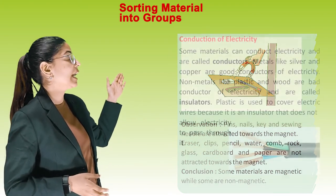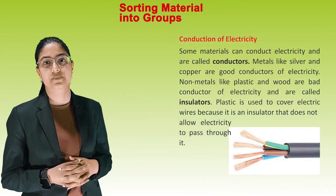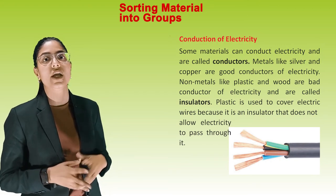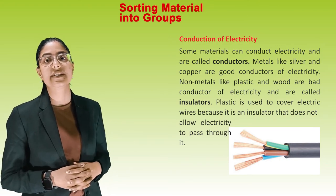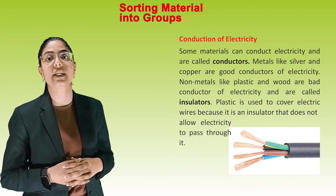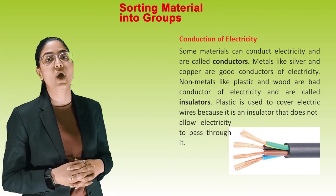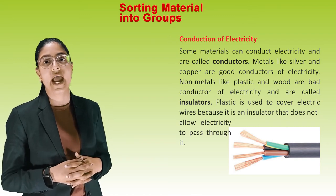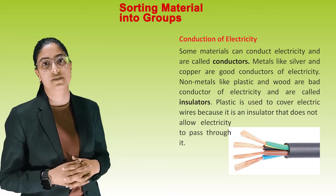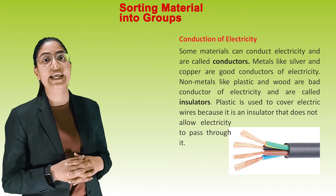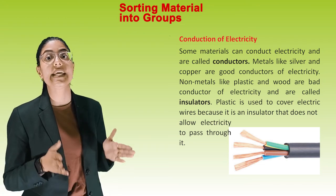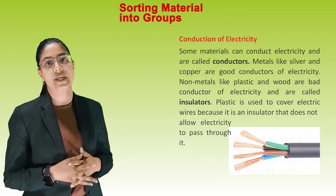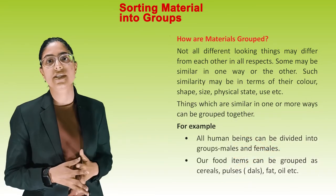Conduction of electricity: some materials can conduct electricity and are called conductors. Metals like silver and copper are good conductors of electricity. Non-metals like plastic and wood are bad conductors of electricity and are called insulators. Plastic is used to cover electric wires because it is an insulator that does not allow electricity to pass through it.